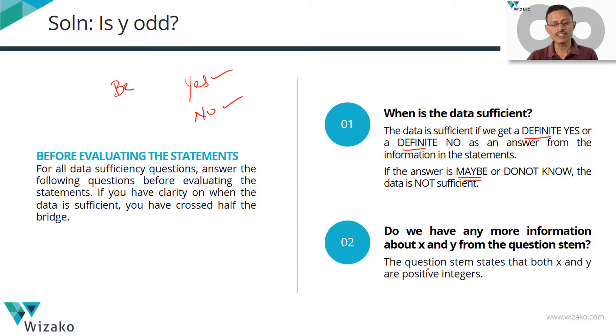Let's keep track of certain little things that come from the question stem. What information do we have about x and y from the question stem? We know that both are positive integers. This is vital to solving this question.